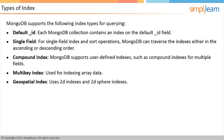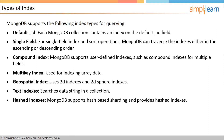Geospatial Index: To query geospatial data, MongoDB uses two types of indexes: 2d indexes and 2dSphere indexes. Text indexes search data strings in a collection. Hashed Index: MongoDB supports hash-based sharding and provides hashed indexes, which hash the field values. The index types will be discussed in detail later in the lesson.